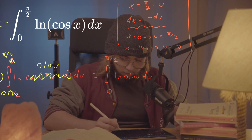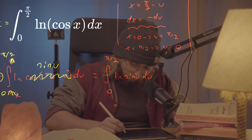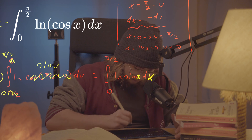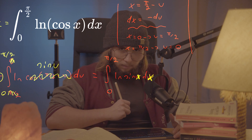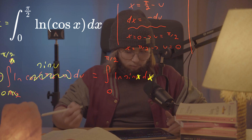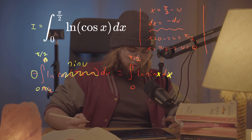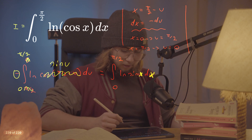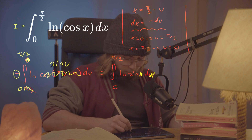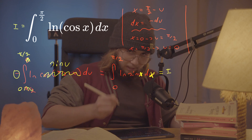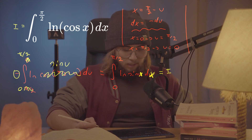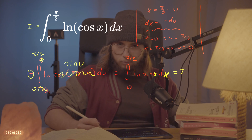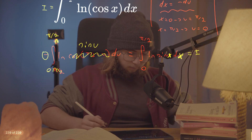So I can just switch this u back to x without any problem. And so what I actually get from doing that is that, pretty interestingly, my integral of ln(cos x) is the same as the integral between the same bounds of ln(sin x). Well, that's nice, because I can just maybe add those two up together and hopefully get something interesting out of it.